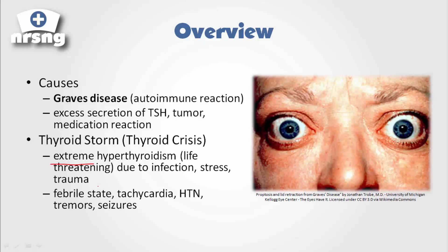With this extreme hyperthyroidism, the body goes into a hypermetabolic state. Heart rate is going to increase, breathing is going to increase, they're going to become hypertensive, this can lead to tremors and seizures, and they become very febrile. If this goes untreated or unnoticed, in severe cases this could lead to death.